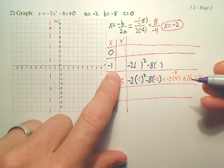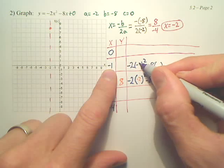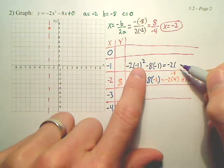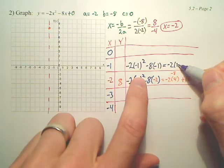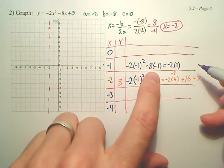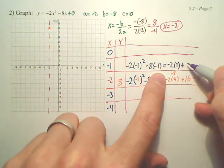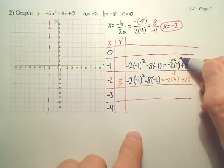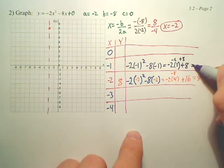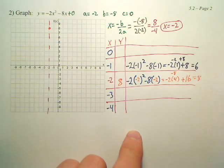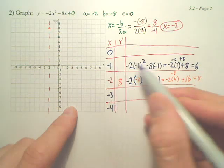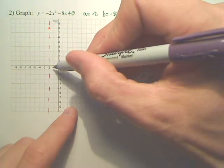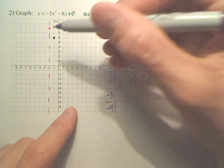What number are we plugging in? Negative 1, according to the table. That becomes negative 2 times negative 1 squared is 1, and negative 8 times negative 1 is positive 8. So I got a negative 2 plus an 8 is 6. So negative 1 goes up 6.